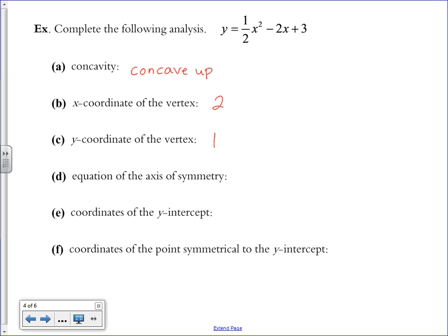The equation of the axis of symmetry, x equals 2. It was x equals the x coordinate of the vertex.